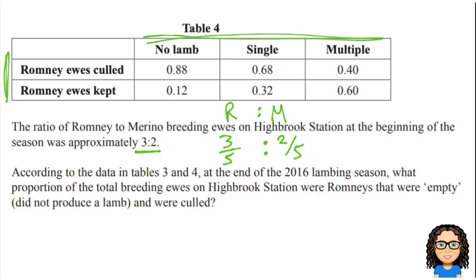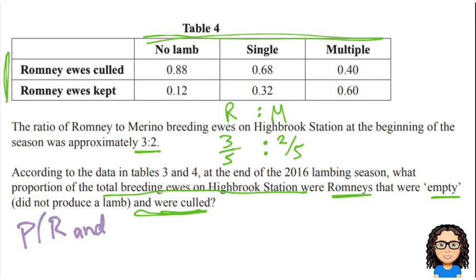So I've got these three different pieces of information — two tables and this ratio. The question now asks: what proportion of the total breeding ewes on the station were Romneys that were empty (so didn't produce a lamb) and were culled? So I want the probability of being a Romney, and no lamb, and culled.